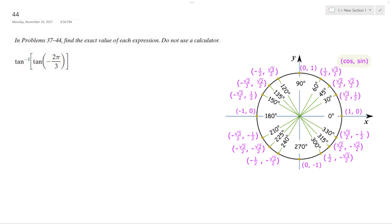All right, so we want to find the inverse tangent of the tangent of negative 2π over 3. Negative 2π over 3, that's 240 degrees.